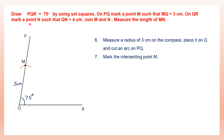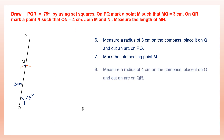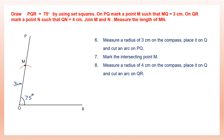Now mark a point N on QR such that QN is 4 centimeters. Measure a radius of 4 centimeters on the compass, place it on Q, and cut an arc on QR. We've cut an arc and this is 4 centimeters. Name that intersecting point N. We have M here and N here, and we have to join M and N.